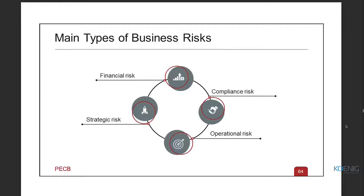The four main types are: financial, compliance, operational, and strategic. Financial risk is quite self-explanatory — any uncertainties resulting in negative impact or loss due to money is what we call financial risk. Compliance risk covers areas where we are supposed to satisfy regulatory norms, policies, or statutory requirements — the likelihood of inability to meet them is what we call compliance risk.